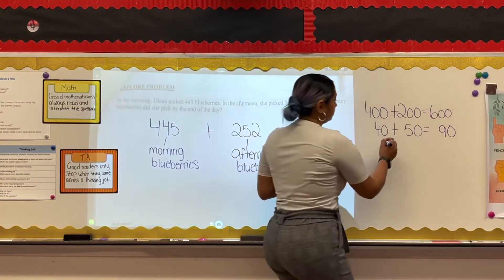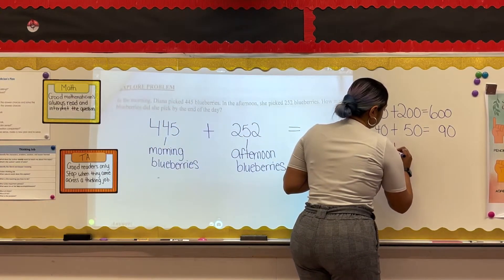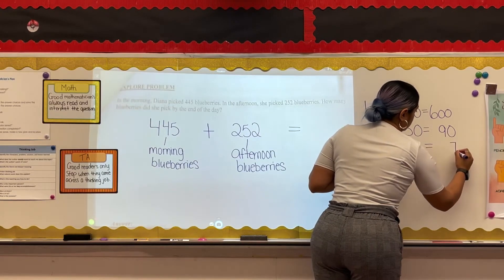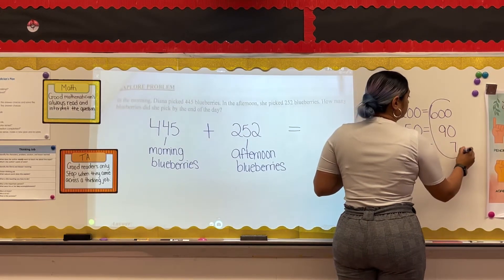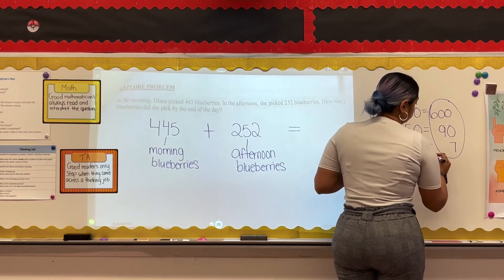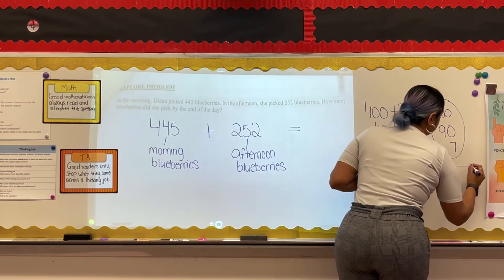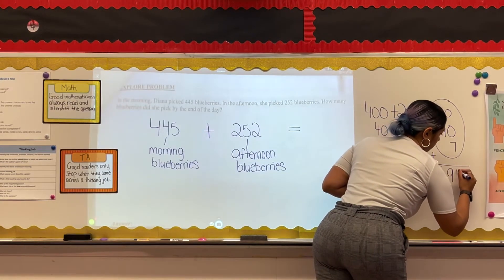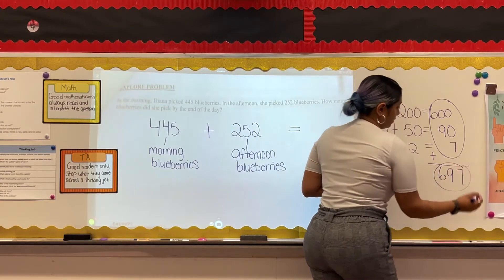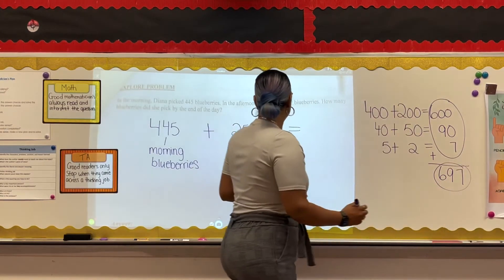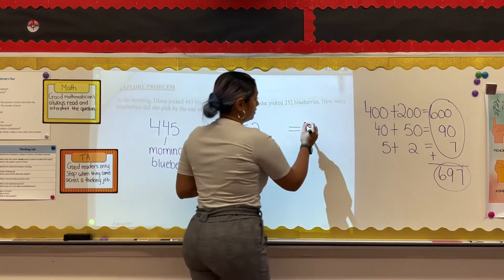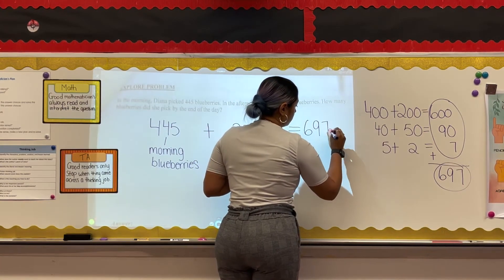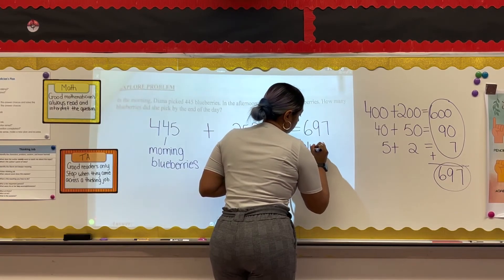Finally, I'll add the ones to make 5 plus 2 equals 7. So: 400 plus 200 is 600, 40 plus 50 is 90, and 5 plus 2 is 7. I can use those sums and add them all together. I know 90 plus 7 is 97, then I just need to add 97 to 600 to make 697. Diana picked 697 blueberries all together.